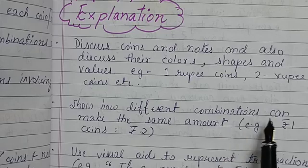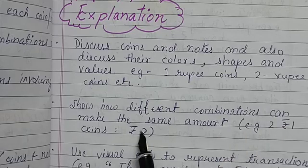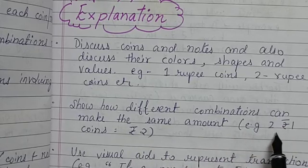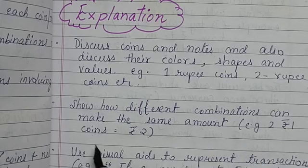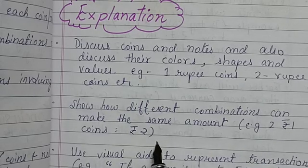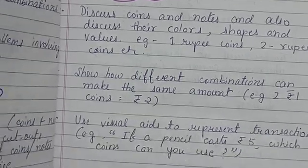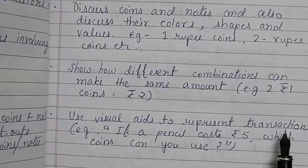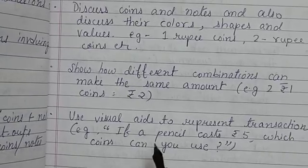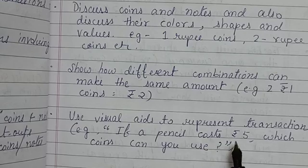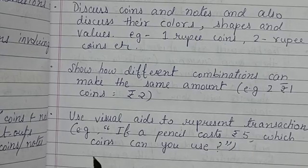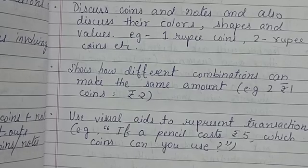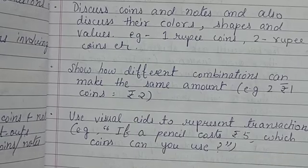Show how different combinations can make the same amount. For example, 1 coin of 2 rupees equals 2 rupees. Use visual aids to represent transactions — for example, if a pencil costs 5 rupees, which coins can you use? You can use a visual aid for this.